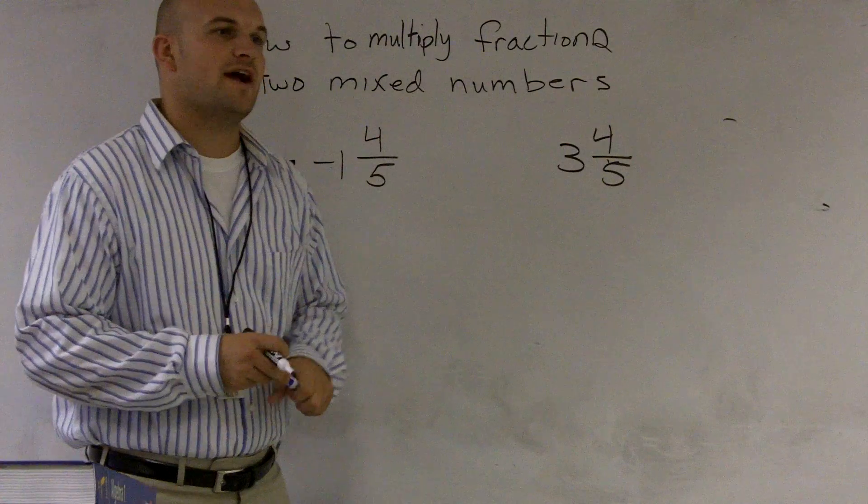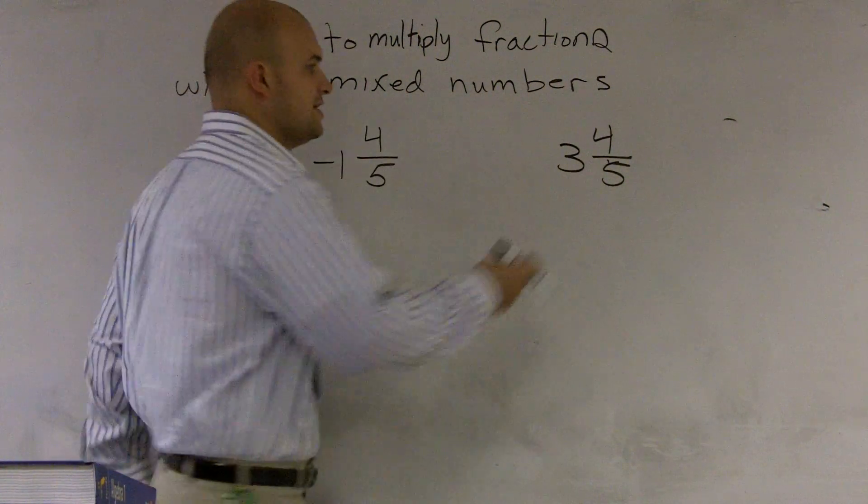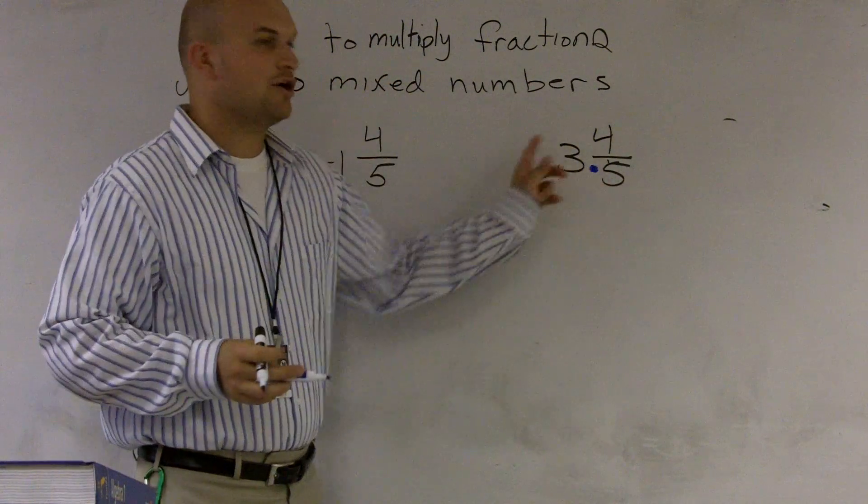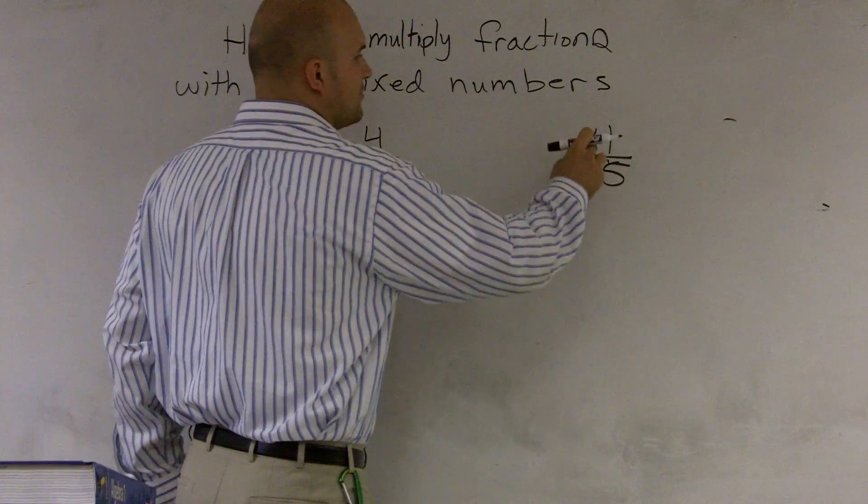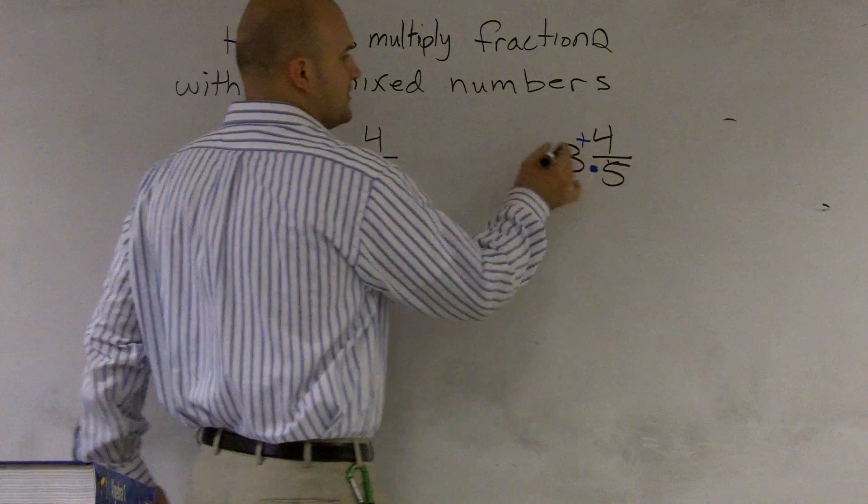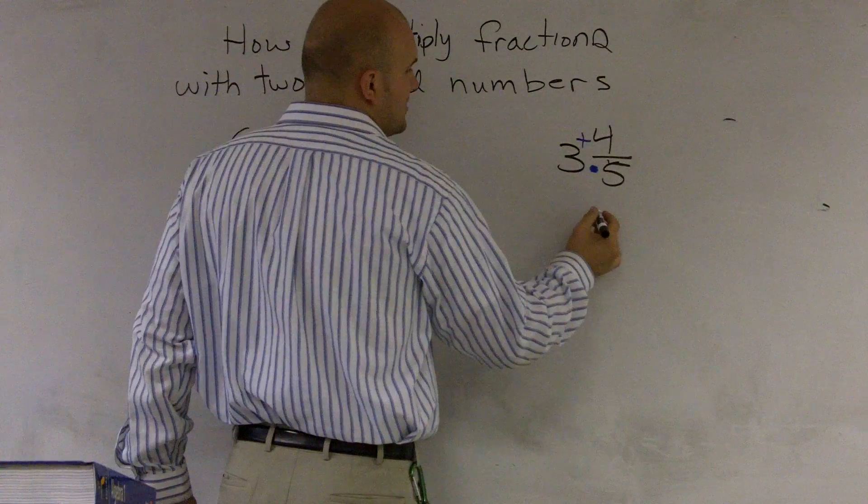So to change this to an improper fraction, what we work with is what we call a steering wheel kind of operation. If you multiply your denominator by your whole number and then add your remaining fractions, that will give you your improper fraction. So three times five is going to be 15 plus four will become 19.